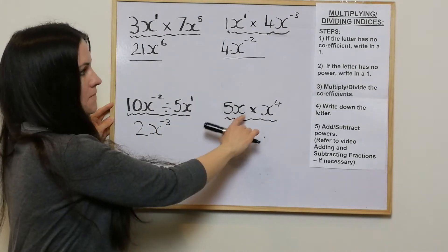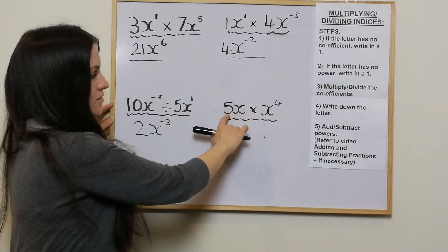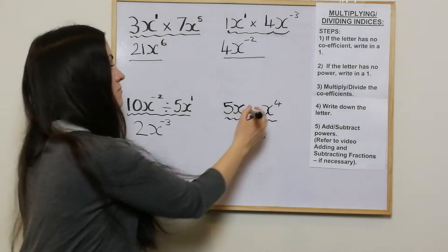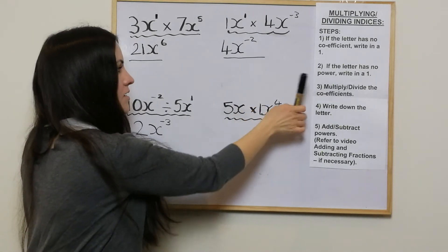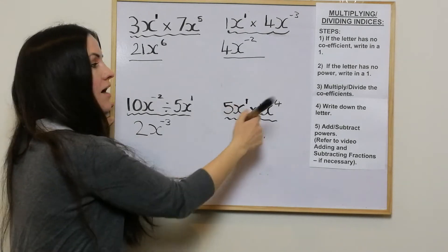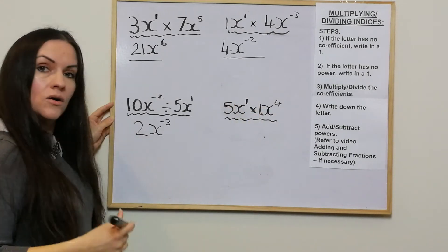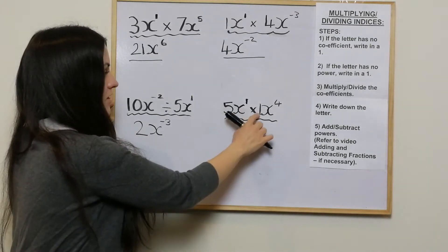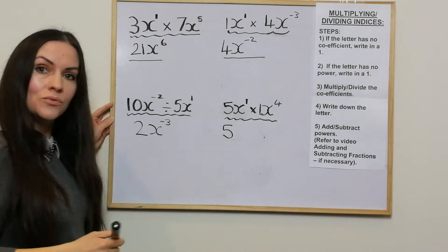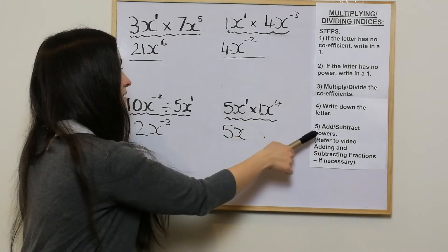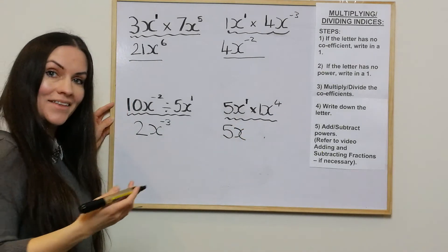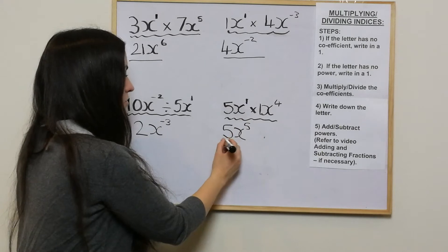The next example: 5x to the power of 4 times x. The first letter has a coefficient but the second doesn't, so write in a number 1. The second letter has no power, so write in a 1. Multiply the coefficients: 5 times 1 is 5. Write down the letter x. Because it's multiplying, we add the powers, and we get 5x to the power of 5.